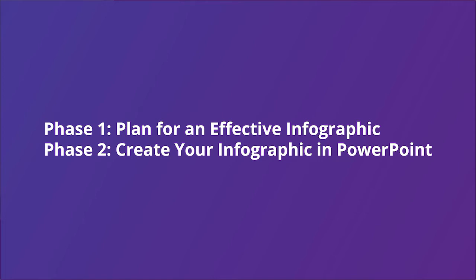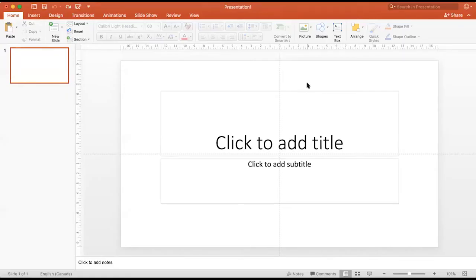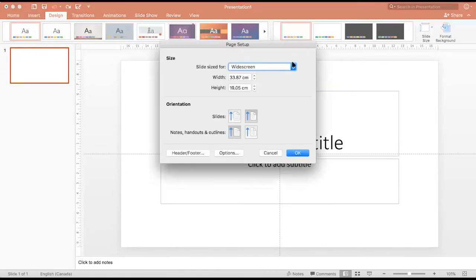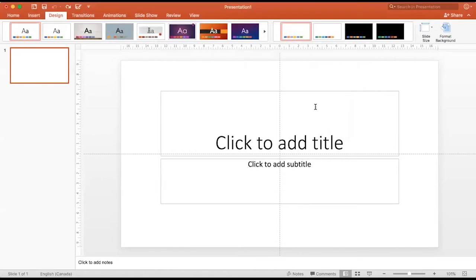Phase two: create your infographic in PowerPoint. To begin, adjust the size of your infographic. Now that you have created an excellent outline, here is a step-by-step guide to help you create an infographic in PowerPoint. Click Design at the top, then click on Slide Size to adjust the size of your infographic. Click on Page Setup, then select Ledger Paper for an 11x17 size. Most infographics are 11x17 to allow enough space for your visual story. Also, ensure that the infographic is vertical-facing.